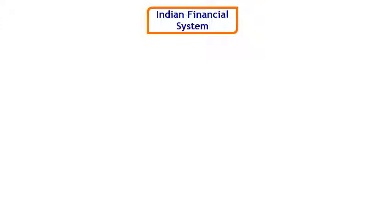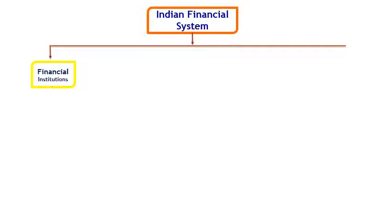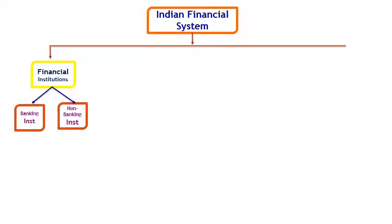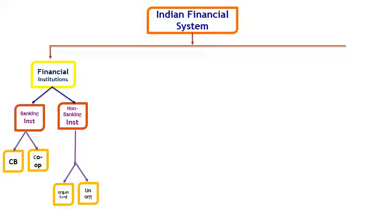The Indian financial system comprises several components. We have four pillars: financial institutions, financial markets, financial instruments, and financial services. Financial institutions deal with financial resources and are segregated into two types: banking institutions and non-banking institutions. Banking institutions include commercial banking and cooperative banking. Non-banking institutions are divided into organized non-banking institutions — that is, NBFCs (Non-Banking Financial Corporations) — and unorganized non-banking institutions.